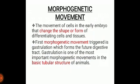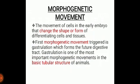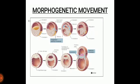The first morphogenesis movement triggered is gastrulation, which forms the future digestive tract. Gastrulation is the most important morphogenesis movement in the basic tubular structure of animals. In the diagram, you can see that in embryonic development how blastula converts into gastrula after cell orientation or movement, and through invagination it forms a double-layer cup-like structure.